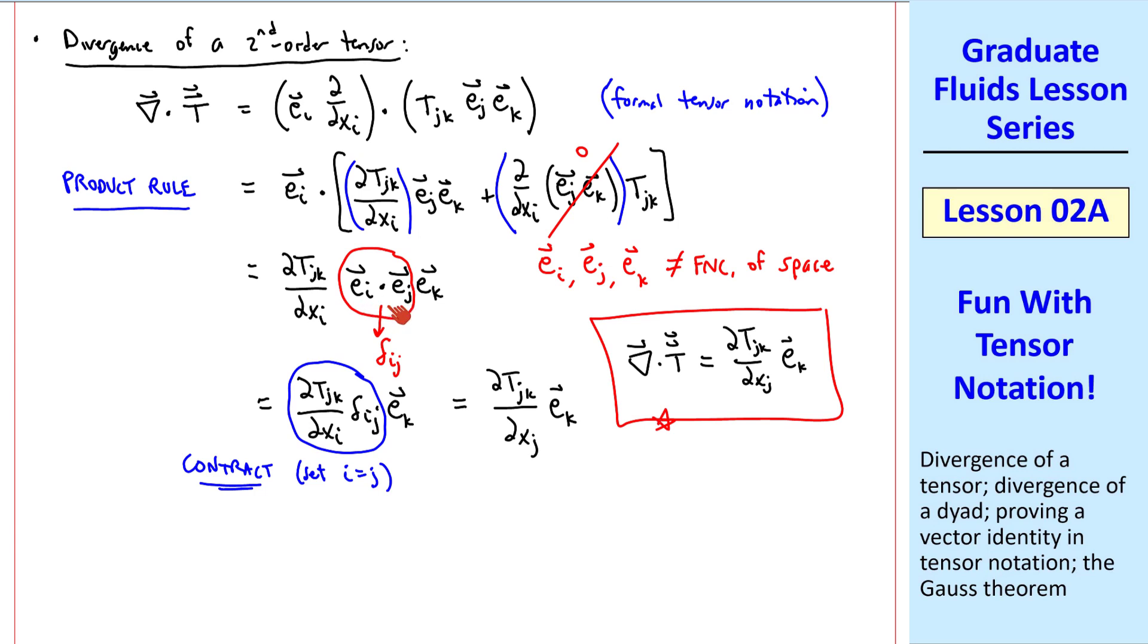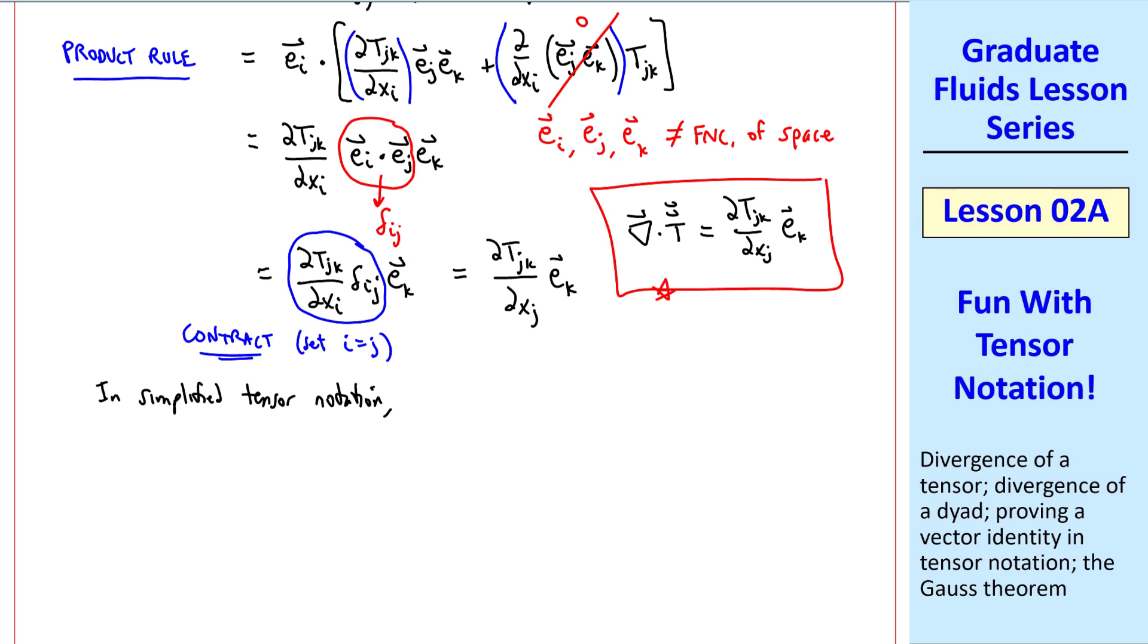I point out that when you have a dot product like this, it applies only to these two vectors, not this one. It kind of goes along for the ride. In what I call simplified tensor notation, we drop the unit vectors, and I write it this way. In formal tensor notation, the ek tells us that this is a vector quantity, and the equal sign is valid. Here, remember, we don't use an equal sign. Instead, I use an arrow, meaning these two are representative of each other, or this implies this, or vice versa.